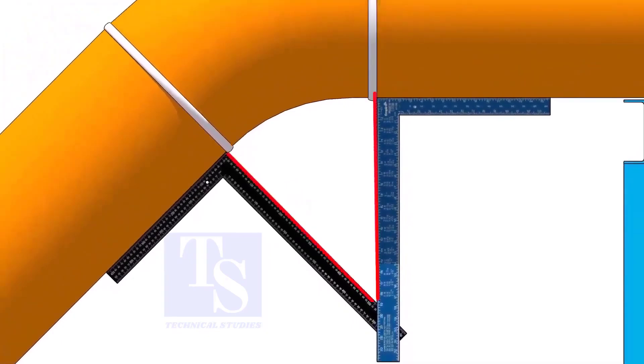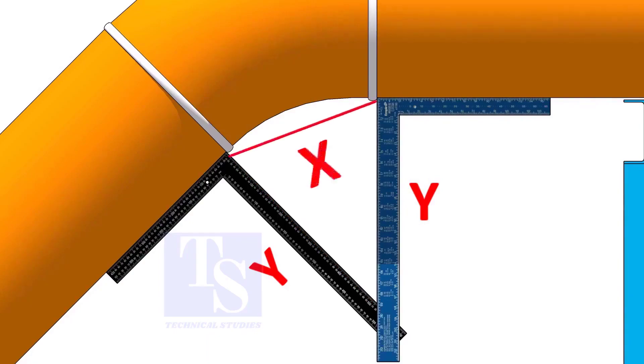Measure the distance from the pipe to the point where the right angles bisect each other. Measuring only one side is enough. Now, carefully measure the distance between the corners of the right angles.